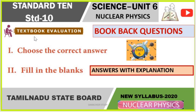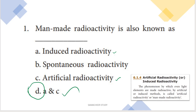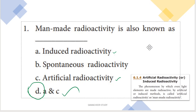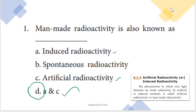Choose the correct answer and fill in the blanks with the answers. First question: man-made radioactivity is also known as... Man-made radioactivity is also known as induced radioactivity and artificial radioactivity.